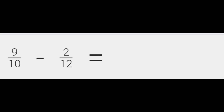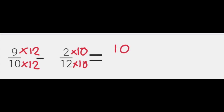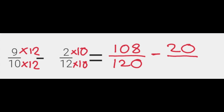So what I'm going to do is multiply this whole side by this denominator, and multiply this whole side by this denominator. So we're going to times 10 by 12 and times 9 by 12. And over this side, we're going to times 12 by 10 and times 2 by 10, because whatever you do to the bottom you have to do to the top. Now we rewrite the problem: 9 times 12 is 108, and 10 twelves are 120.